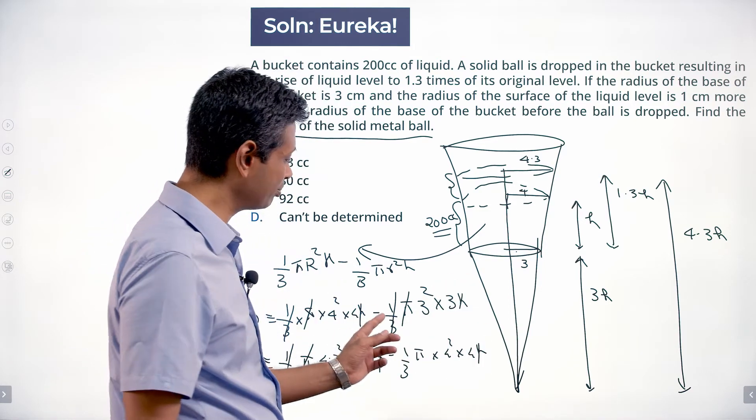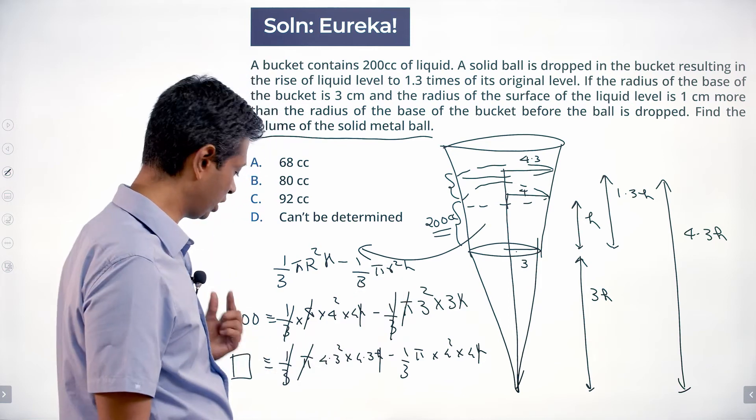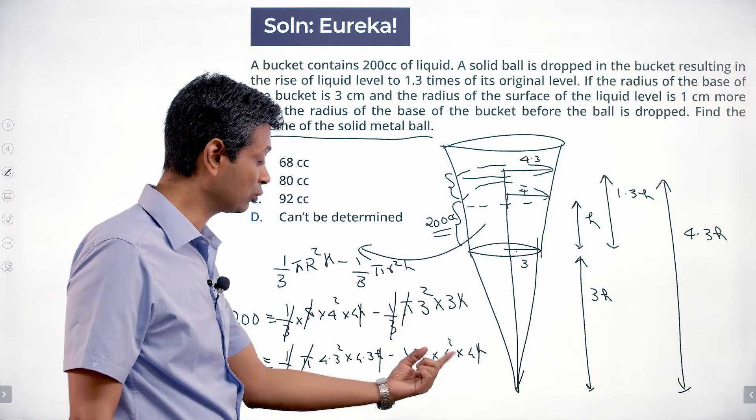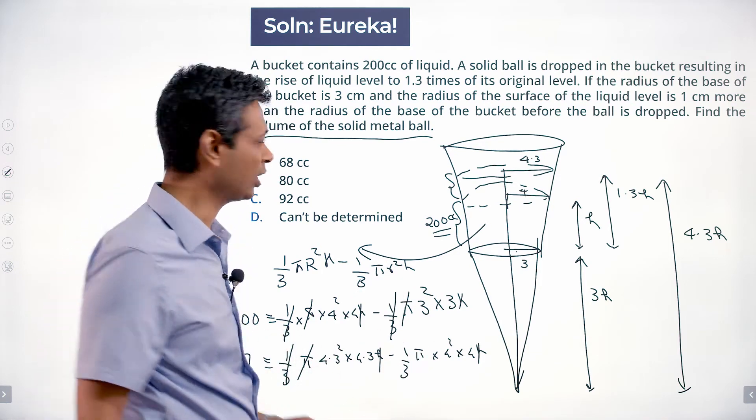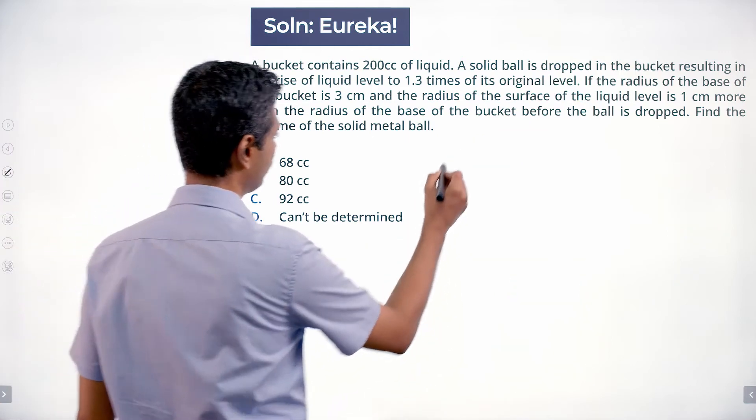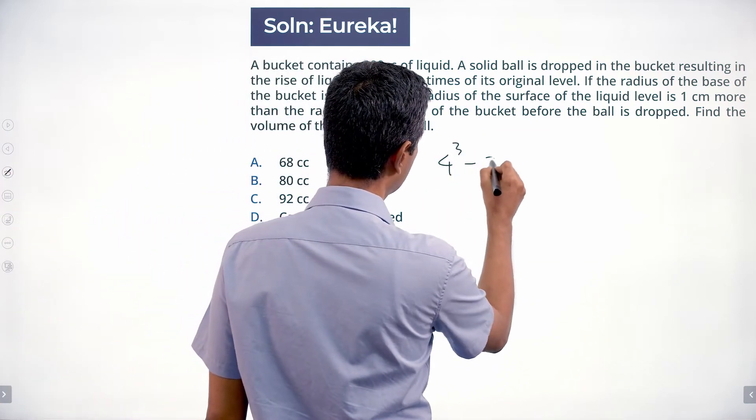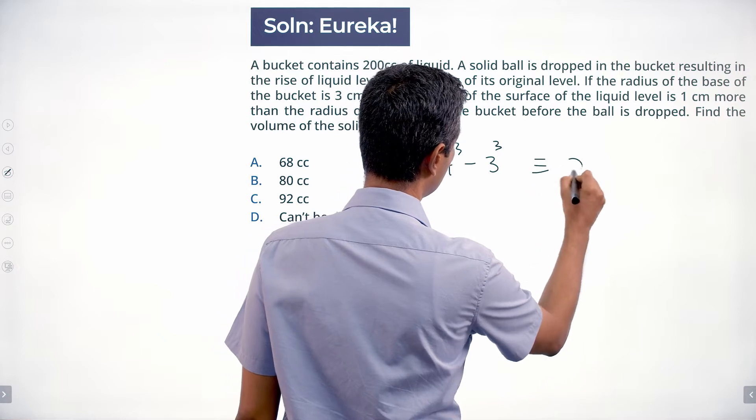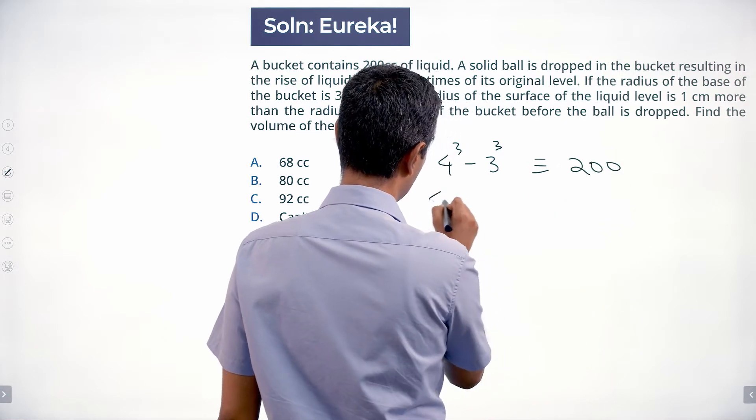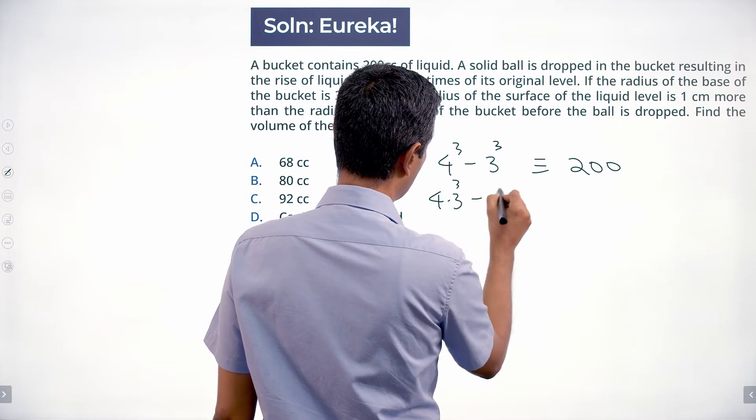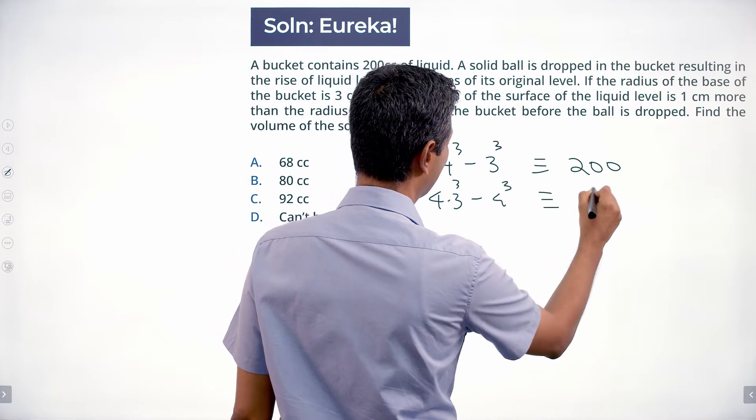4.3³ minus 4³, what will that be linked to? That's all I'm going to do. So I'm going to take the math separately. 4³ minus 3³ is linked to 200. 4.3³ minus 4³, what is that linked to?